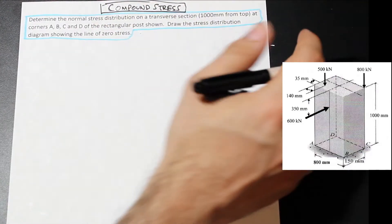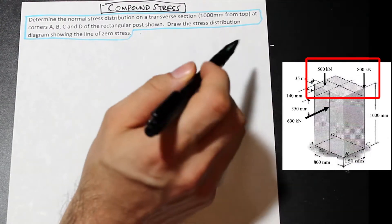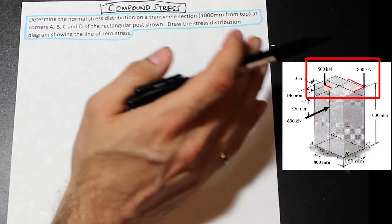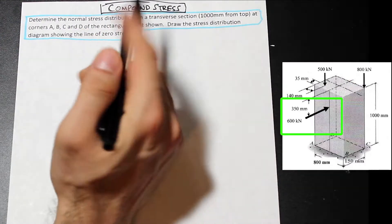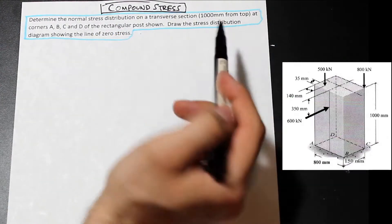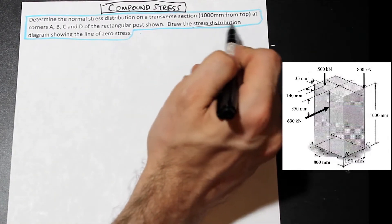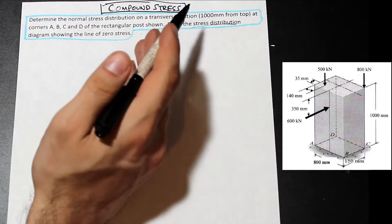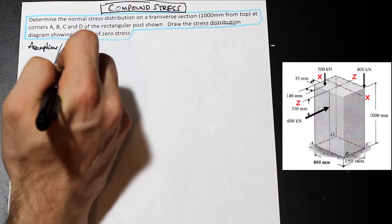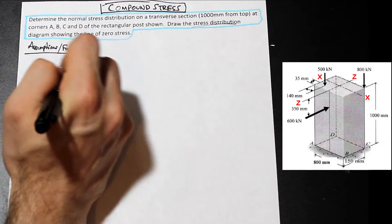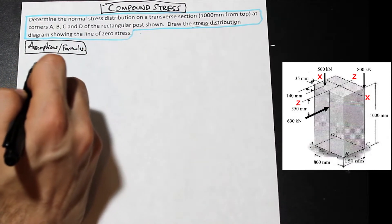Before we start this question, we have two axial forces: a 500 kN and an 800 kN axial load, and those have eccentricities, causing uneven normal stresses at the base. We also have a 600 kN lateral force. We're asked to determine the normal stress distribution on the transverse section at the base, at the corners of the rectangular post, draw the stress distribution, and show the line of zero stress. First, we need to write down our assumptions and formulas.